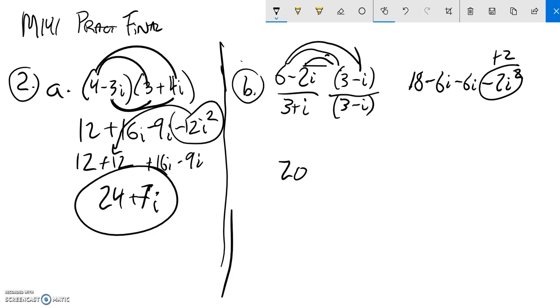So I'm going to have 20 minus 12i up top. In the denominator, 3 times 3 is 9, i times 3 is 3i, negative i times 3 is negative 3i, those cancel out. i times negative i is negative i squared, so that's a plus 1. So I have 10 in the denominator.